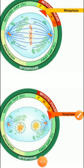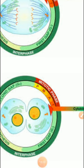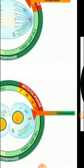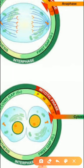Followed by telophase, the next process of mitotic cell division is cytokinesis. Cytokinesis means division of the cytoplasm. During cytokinesis, the cytoplasm divides and two daughter cells are formed. These are all the steps which occur during mitotic cell division.